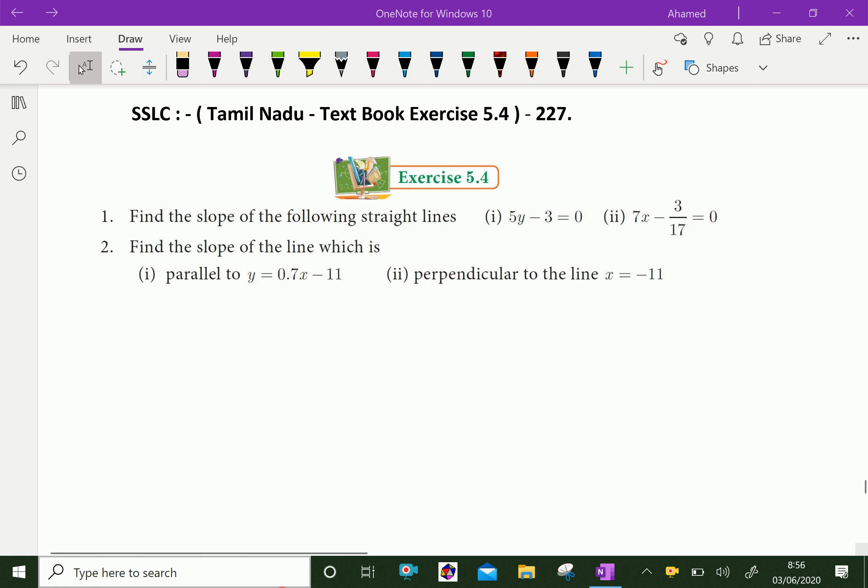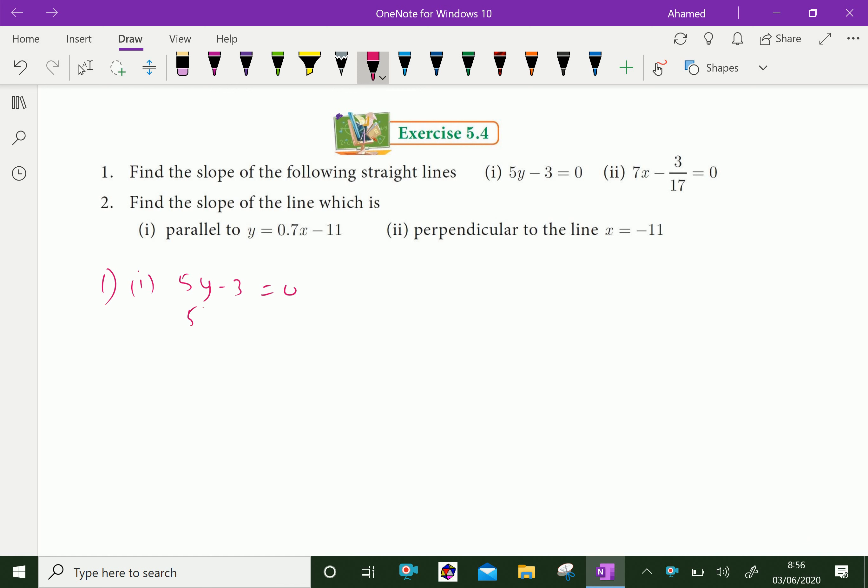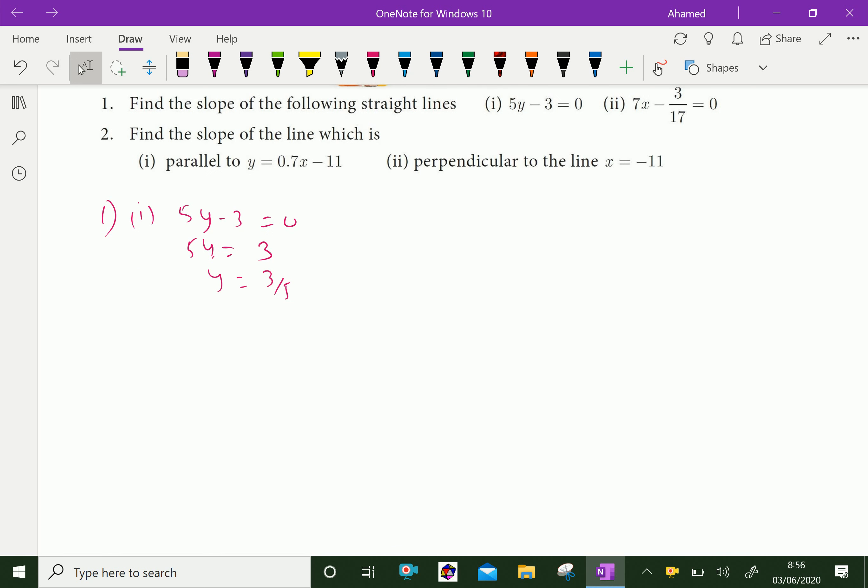First one. The given equation is 5y - 3 = 0. Here, 5y = 3, and y = 3/5. 3/5 is equal to y.